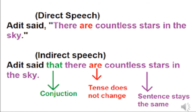Another example of a universal truth: 'Adit said there are countless stars in the sky.' This is true, we can't change it. It will be: 'Adit said that there are countless stars in the sky.'